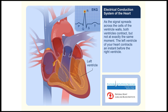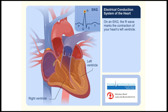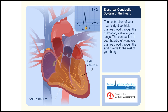The left ventricle of your heart contracts an instant before the right ventricle. On an EKG, the R wave marks the contraction of your heart's left ventricle, and the S wave marks the contraction of your heart's right ventricle. The contraction of the right ventricle pushes blood through the pulmonary valve to your lungs, while the left ventricle pushes blood through the aortic valve to the rest of your body.